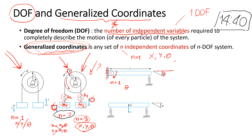How about this? We have a bar placed on two springs. How many degrees of freedom of this system? Two degrees of freedom. The generalized coordinates are X, which describes the vertical displacement of the center of gravity G, and Zeta, which describes the inclination of the bar.